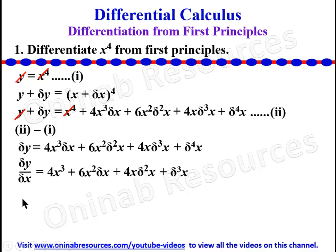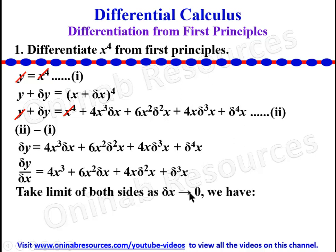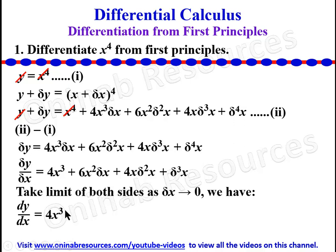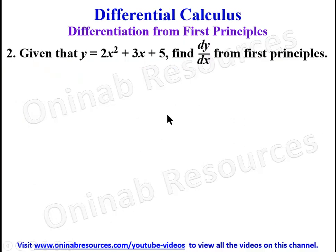Now the next thing is to take the limit of both sides as delta x approaches 0. The limit of delta y / delta x as delta x approaches 0 is dy/dx. So we now have dy/dx = 4x³, as all the remaining terms go to 0. The derivative of x⁴ from first principles is 4x³.